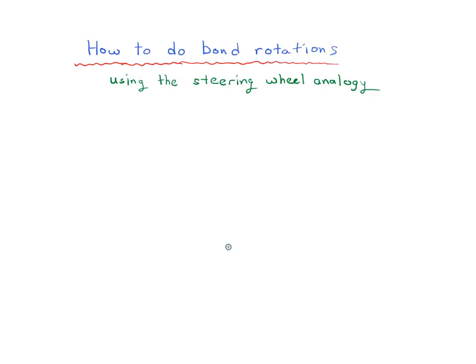This video is about how to do bond rotations using what I call the steering wheel analogy. We're going to spend the first part of this video using a bit of analogy to figure out how this applies to organic chemistry. First of all, why might you need to learn how to do bond rotations? It's an important skill, especially in the first semester of organic chemistry.